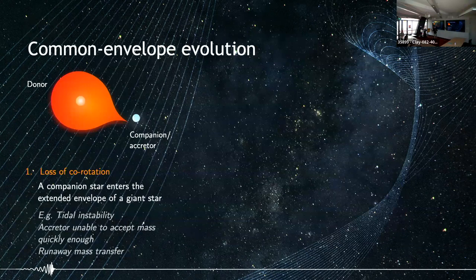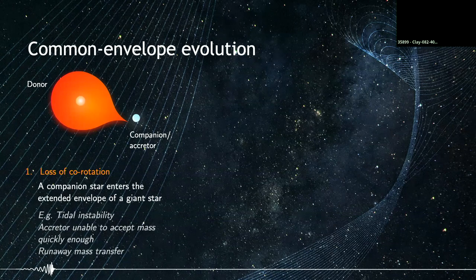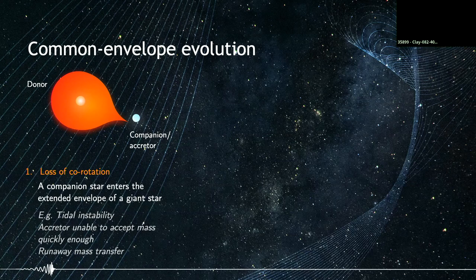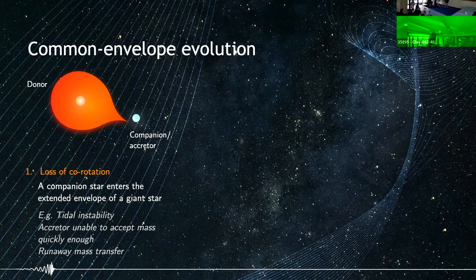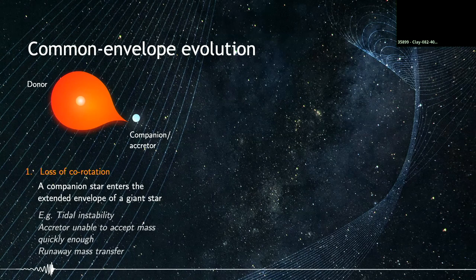The common envelope phase starts when a companion star — also called the accretor — enters the extended envelope of a giant star, also called the donor. This could be due to a tidal instability like the Darwin instability that drives the binary to shrink in a runaway process, or more generally when mass transfer occurs in a runaway fashion where more mass lost leads to greater orbital shrinkage and more material piling up around the orbit, engulfing both stellar companions.